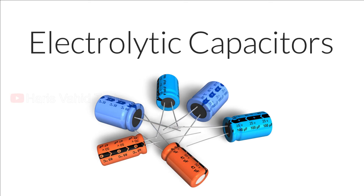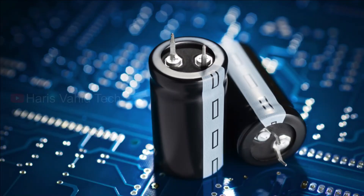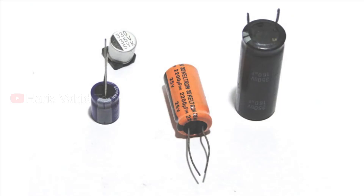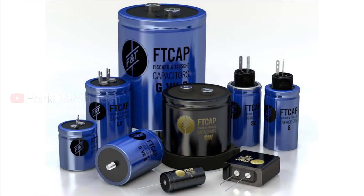Electrolytic capacitors use an electrolyte — a liquid or gel containing a high concentration of ions — to achieve a larger capacitance than other capacitor types. They have been in use for many years and are found in almost all circuit designs. A major difference from other capacitor types is that electrolytic capacitors are polarized, meaning the voltage on the positive terminal must always be greater than the voltage on the negative terminal. The negative leg is usually marked with a negative symbol on the body.